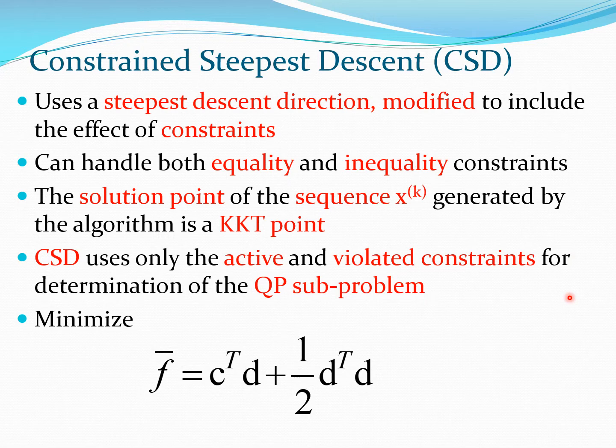CSD method also uses just the constraints which are active or violated. That means these constraints must lie on the boundary of the feasible region or they are not in the feasible region. These constraints are used to determine the QP sub-problem and to guide the QP sub-problem.